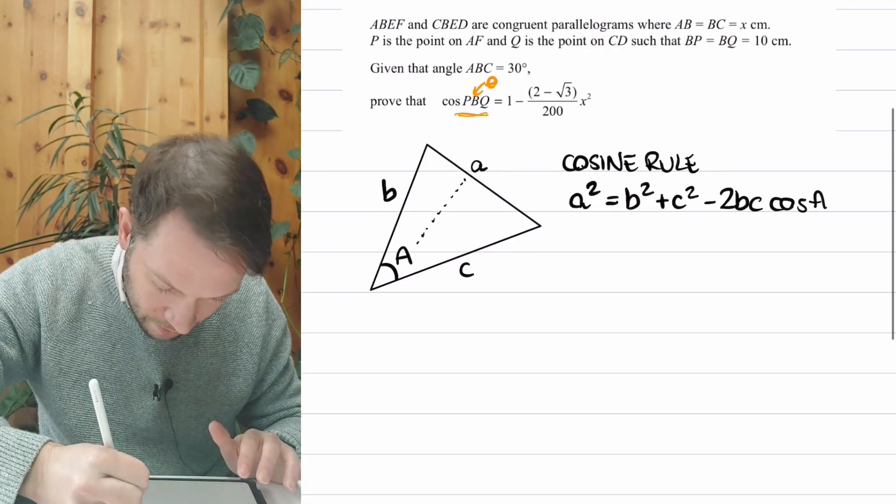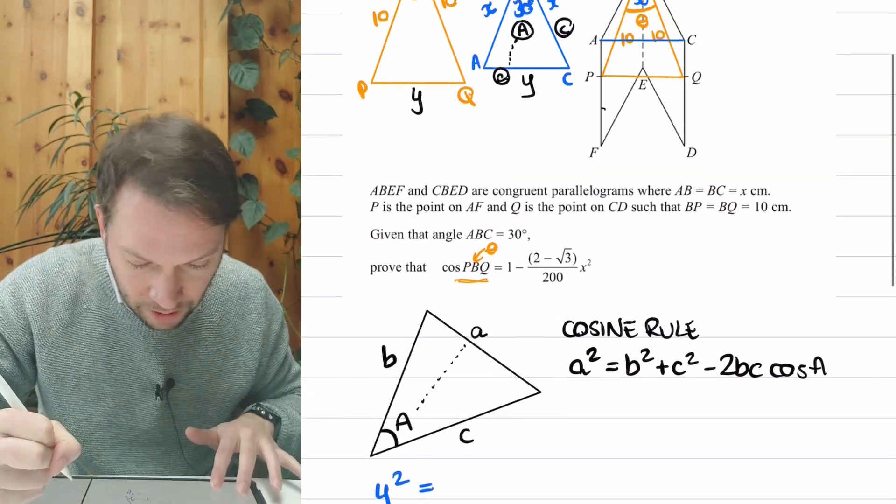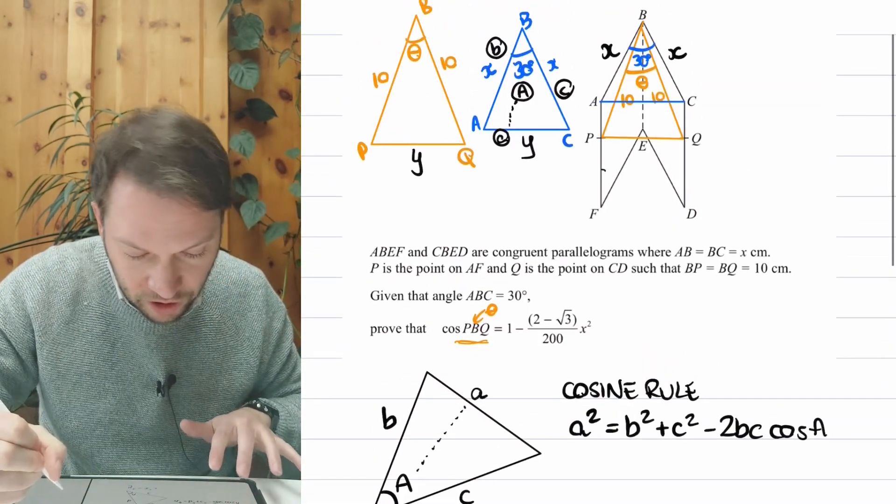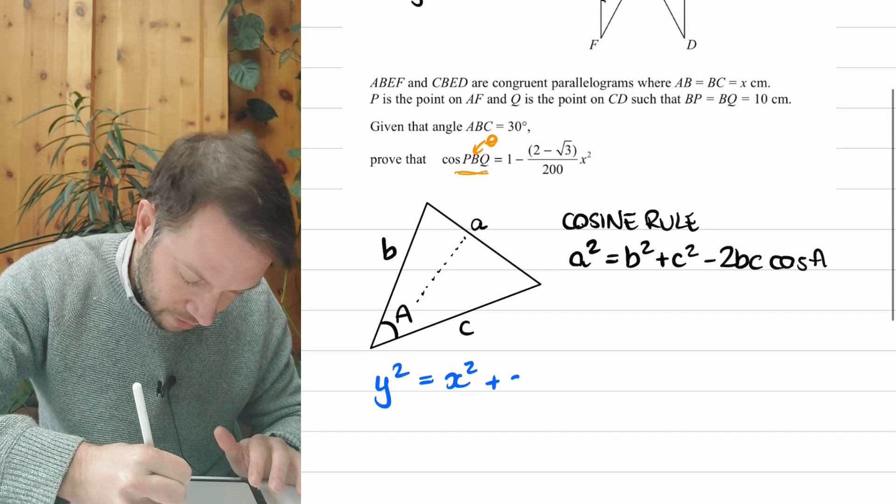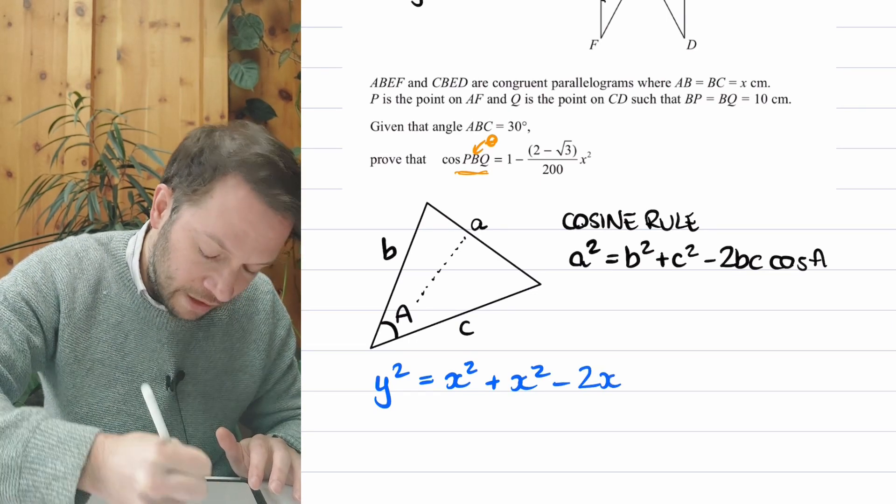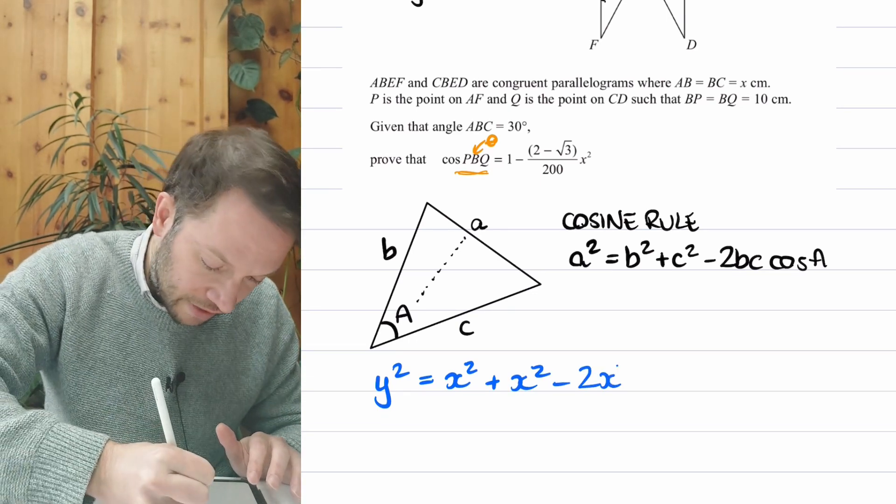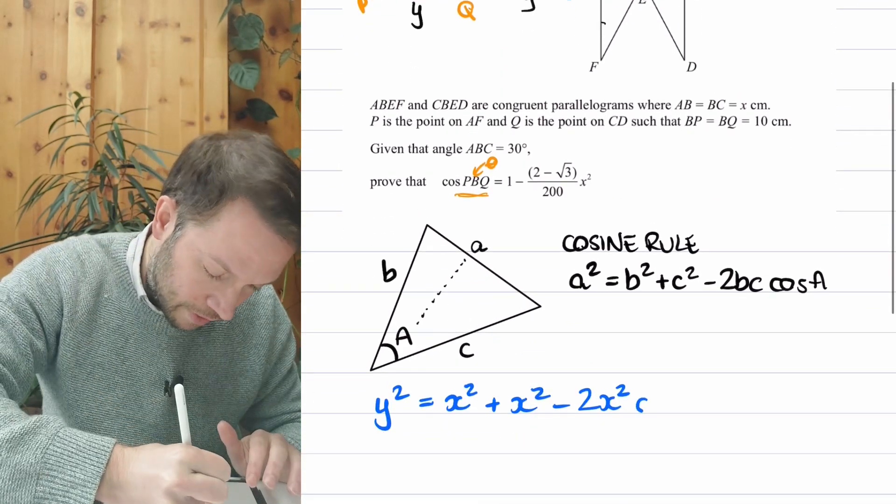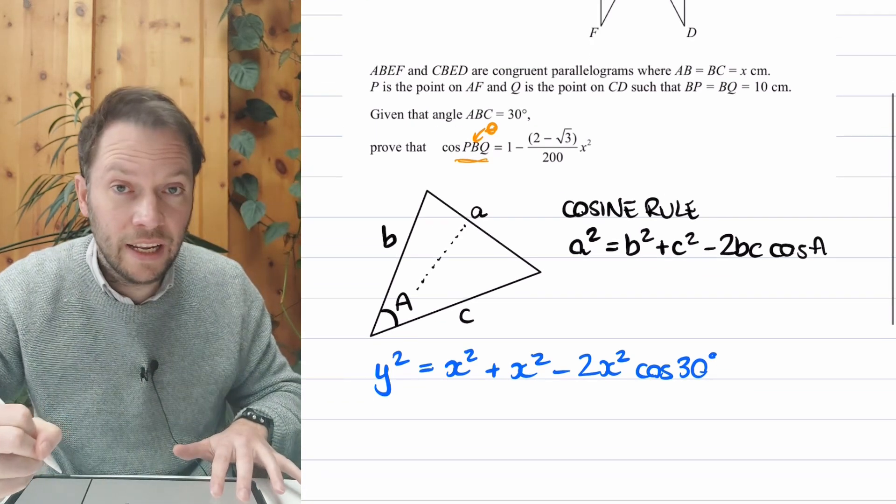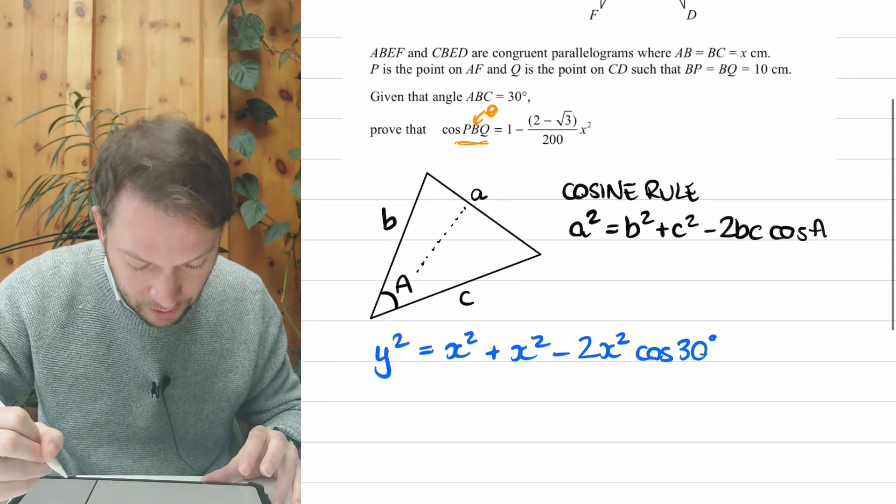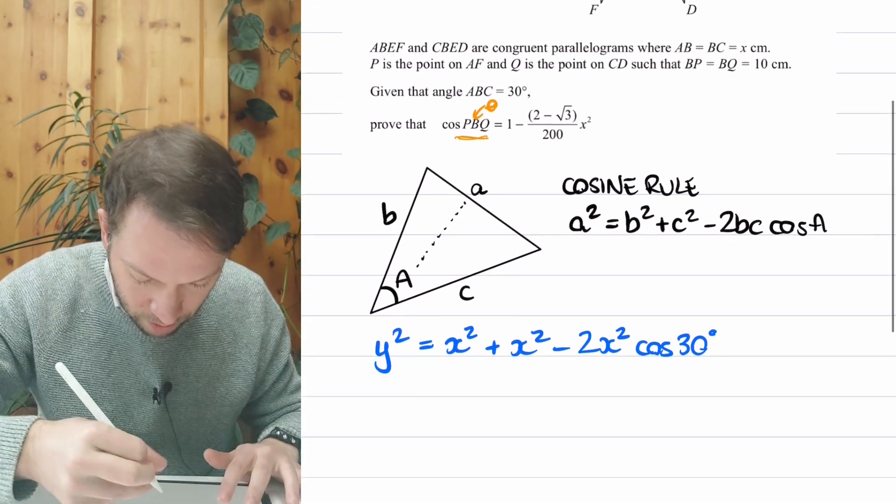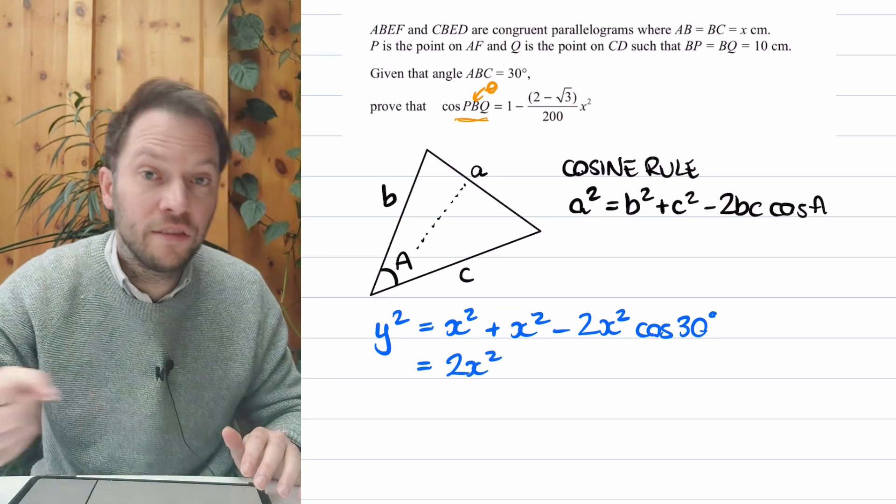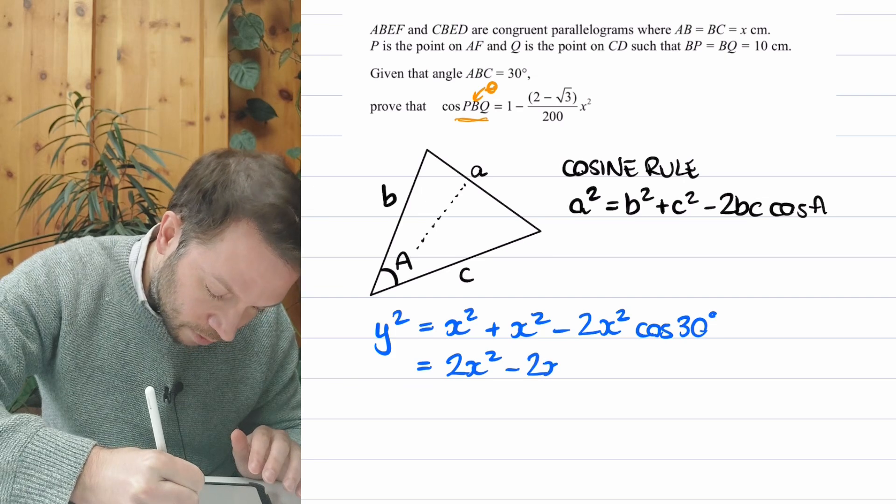And I'm now going to use that with the cosine rule. So we've got little a squared, which is Y squared, is equal to B squared, which is X squared, plus C squared, which is also X. So X squared minus 2BC. So X times X, which is X squared, times by the cos of the angle A. So cos of 30 degrees. Now let's just try and simplify this. So we can simplify this as 2X squared, because X squared plus X squared is 2 lots of X squared. And we've got minus 2X squared.